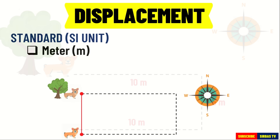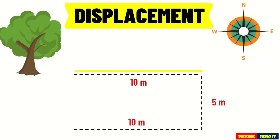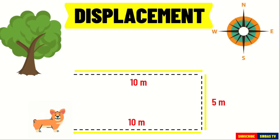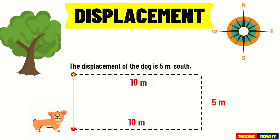Let us take another look at our example. A dog ran 10 meters to the east, then 5 meters to the south, and another 10 meters to the west. We already know that the distance covered by the dog is 25 meters. Let us now find out its displacement. To find this, we just need to measure the distance between the initial position and the final position of the object. Thus, the displacement of the dog is 5 meters south. This means that the dog is 5 meters away from its starting position to its final position. If we draw a straight line from the initial to the final position, we can see that the direction is going south.